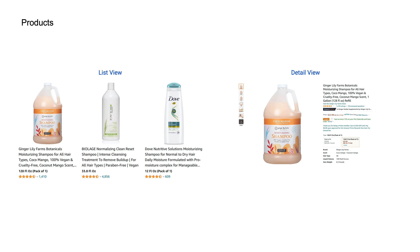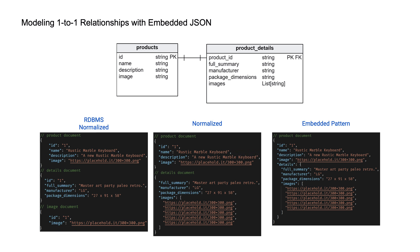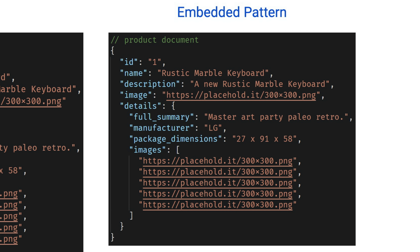Every time we look at the detail view we want to know all the images, so this is a viable query, but when looking at the list view we don't necessarily need all those details. Note that images is just a list of strings, which works well if you have a bounded list — meaning you know the maximum size. In our case a product will have up to five images, so nesting works fine. The fully embedded pattern takes this further: with Redis JSON you can have a single document containing all information, and with Redis Search you can return only the specific keys you care about.